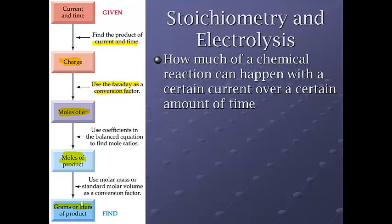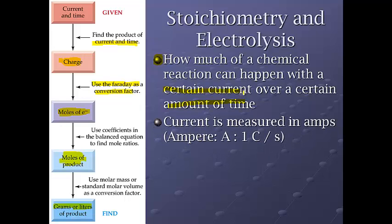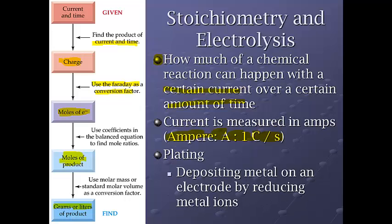Alright, so let's look at some of these. What we can essentially figure out is how much of a chemical reaction will happen or how much product that we can generate based on the current that we have and the amount of time that we utilize that for. The current is typically measured in amps. An amp is one coulomb per second. And this is a lot of times called plating or electroplating, where we force an electric current and we get a solid to precipitate out of solution.